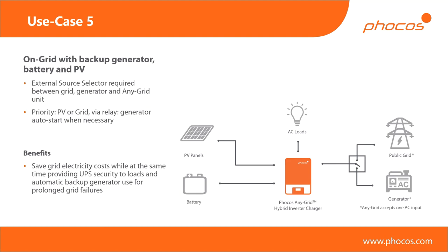In this case, you require an external energy source selector, which is the part shown here, because with a single AC input, you need a way of isolating multiple AC sources from each other. The anygrid takes the guesswork out of quick switching and synchronization. The benefit is really guaranteeing power to your loads under all conditions.